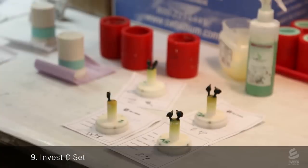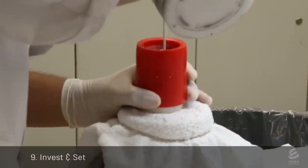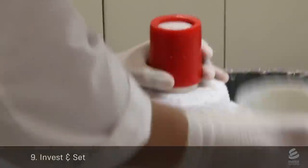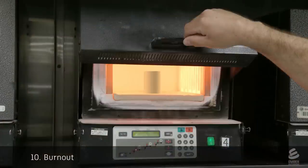The sprued crowns are put into a mold and a technician mixes up the investment material and pours it around the crowns. When the investment is completely set, it's put into an oven until the heat completely vaporizes the wax and 3D printed crown, leaving a crown-shaped void inside the investment.